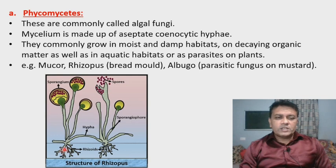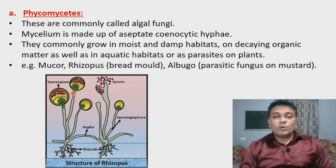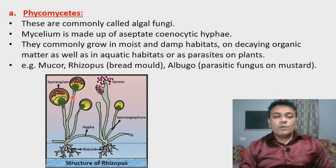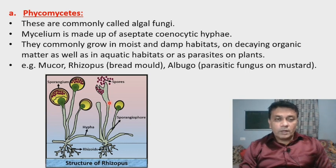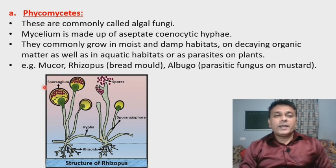The rhizoids or rhizomorph absorb nutrients from dead decaying organic matter. The hyphae are branched; we can see hyphae which grow erect and show a structure called sporangium. Inside the sporangium, spores are produced, and the stalk supporting it is called the sporangiophore. Hyphae that grow and contact suitable decaying organic matter develop into a new Rhizopus and are called stoloniferous hyphae.